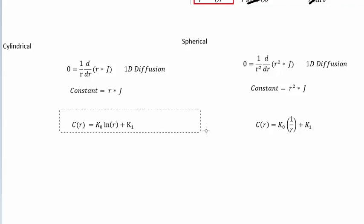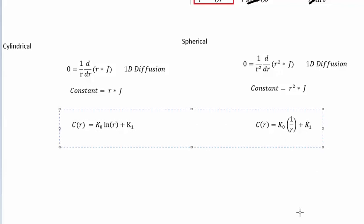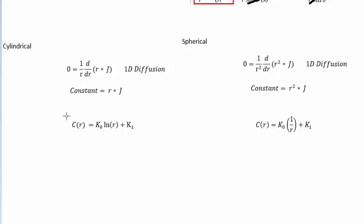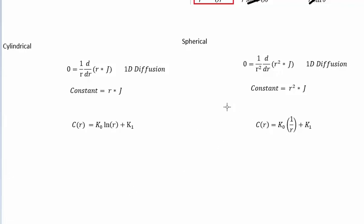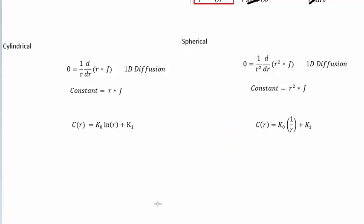After reaching those conclusions, you go through the same steps to get the same general solutions: the logarithmic form for cylindrical and the inverse-R form for spherical. How to actually handle the boundary conditions is an entirely different kind of problem.